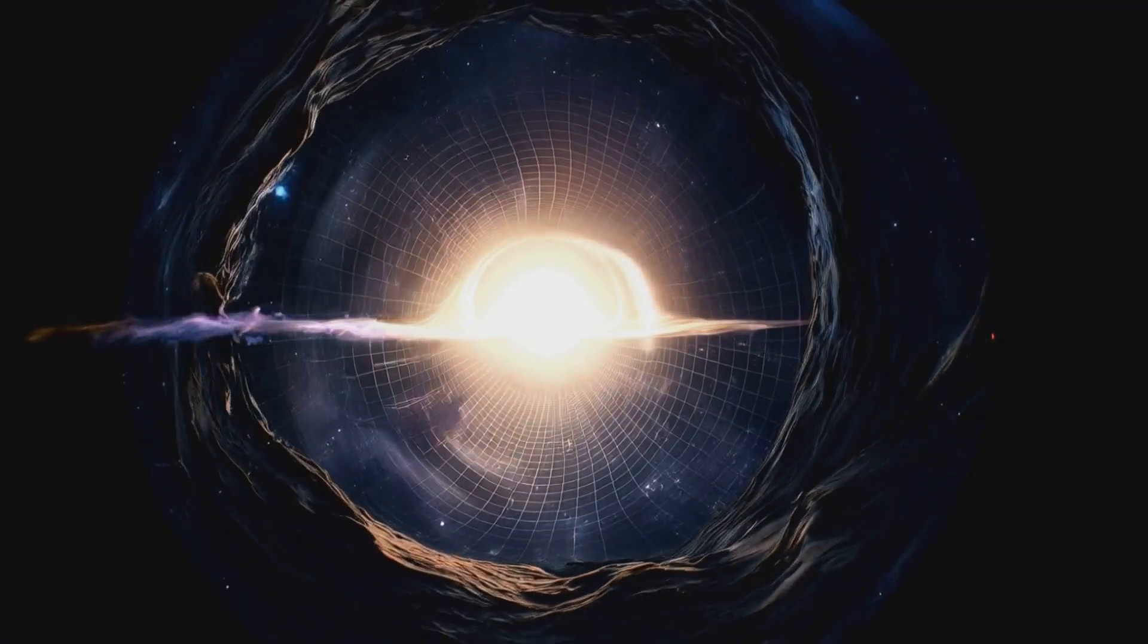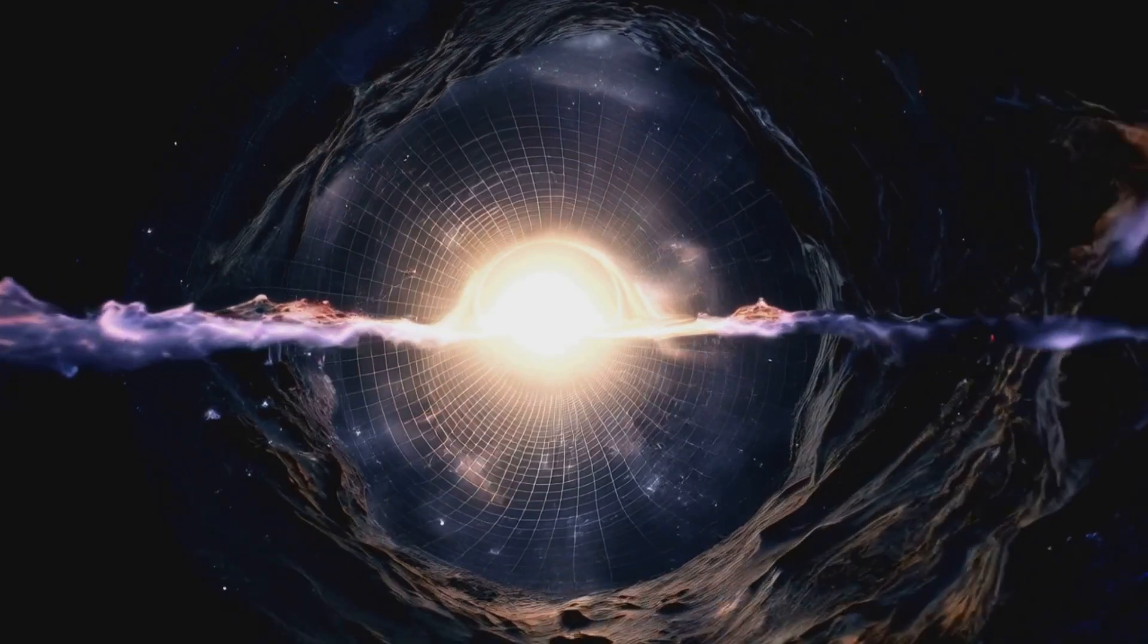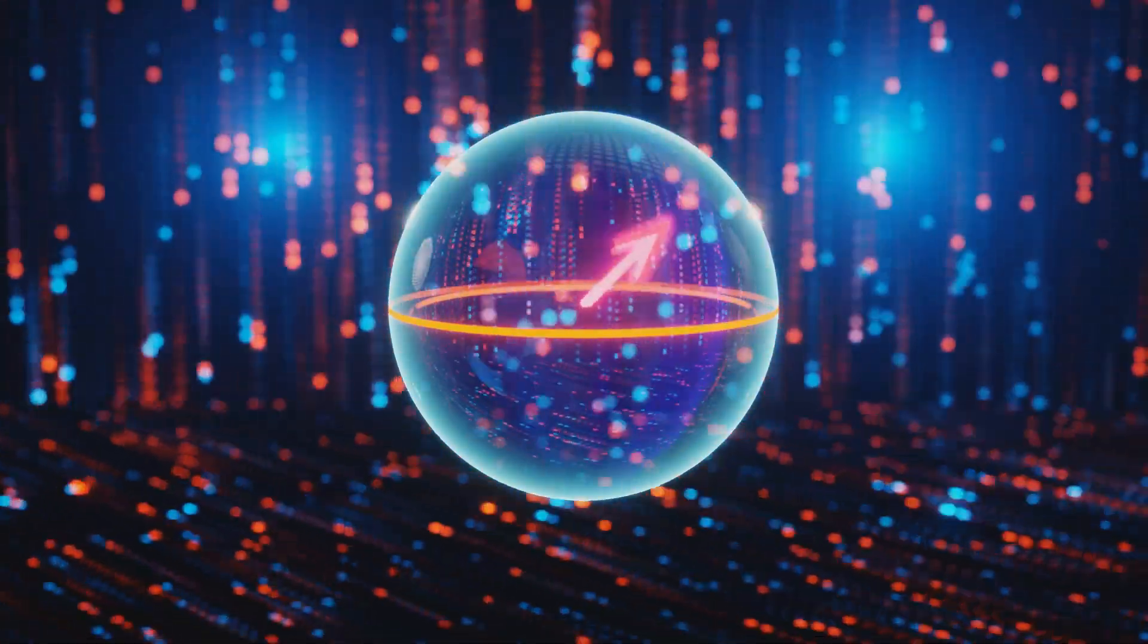This horizon is a canvas where the quantum state vector of the singularity is etched. Each point on this event horizon is a qubit represented as a Bloch sphere.